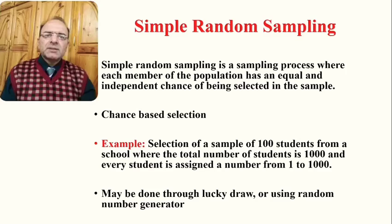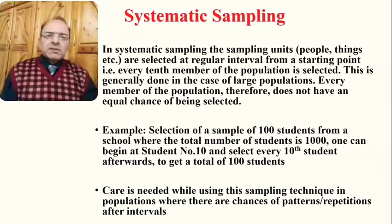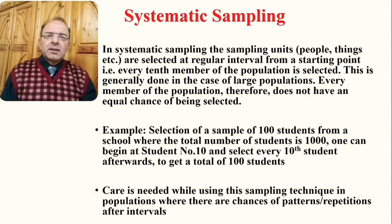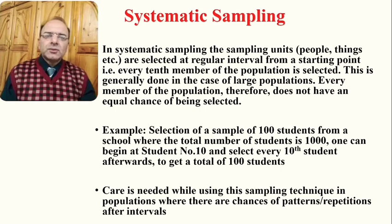The second type of probability sampling is systematic sampling. In systematic sampling, the sampling units — which might be people, things, or other units — are selected at regular intervals from a starting point. There is a starting point, and from there a particular interval is chosen, such as every tenth or every fifth member of the population. This is generally used in the case of large populations.